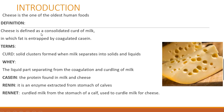Cheese is defined as a consolidated curd of milk in which fat is entrapped by coagulated casein. Casein is a protein present in milk — a white, tasteless, odorless protein that is precipitated from milk when an enzyme called renin is added. Renin is an enzyme extracted from the stomach of calves.